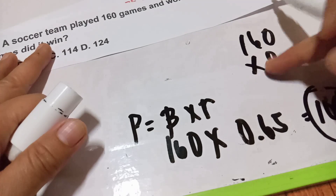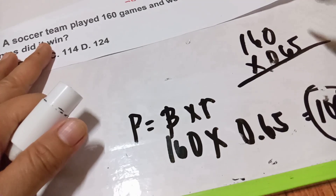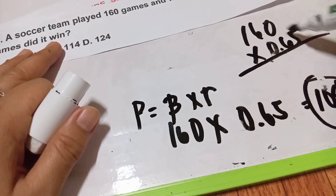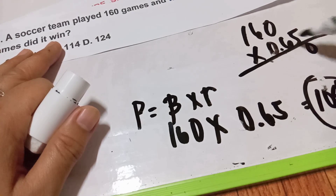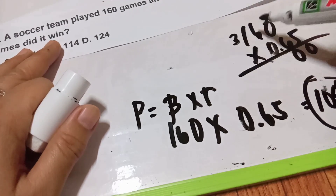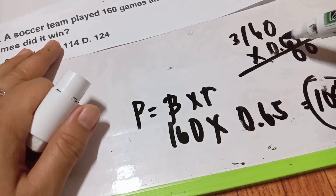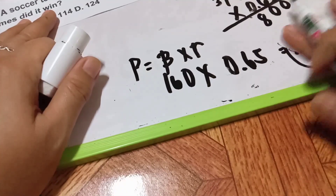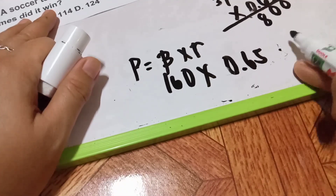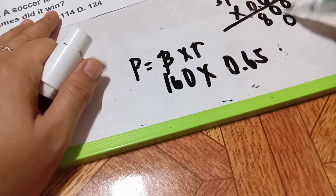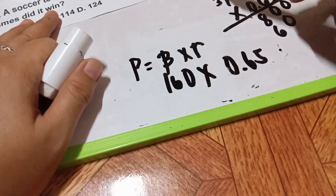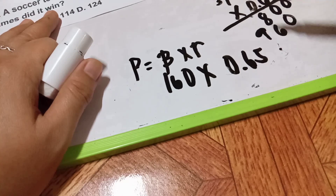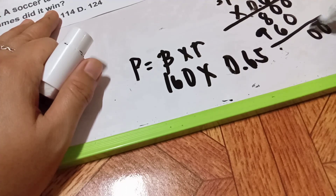Let me show the manual calculation: 160 times 0.65. Working through the multiplication: 1 times 0 is 0, 6 times 5 is 30, continuing — 8, then 36, 1 times 6 is 6 plus 3 is 9, and the answer comes to 104.